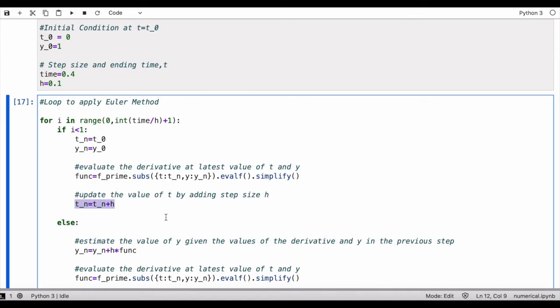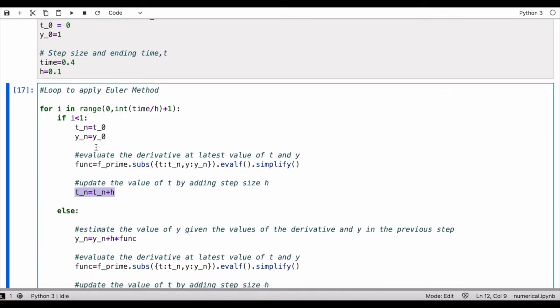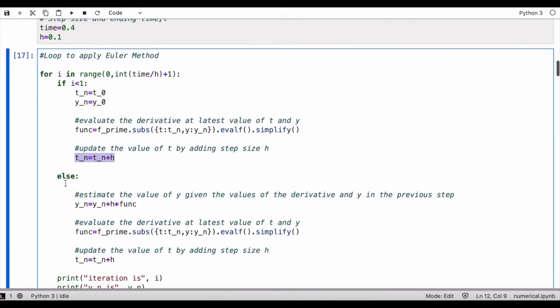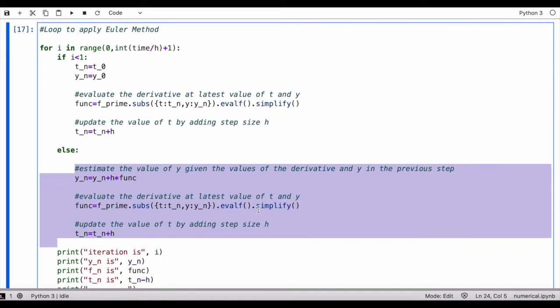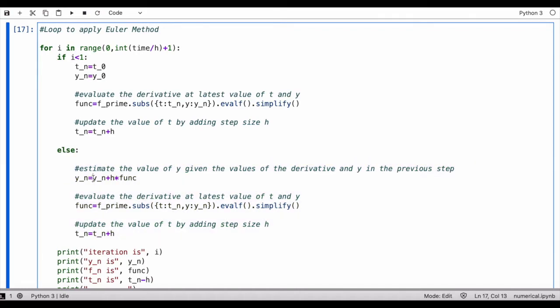Then we will move to the second iteration where i goes to 1 in this case, and it will run this block of code. It's going to estimate the value of y given the value of the derivative and y in the previous step.